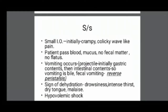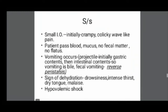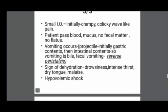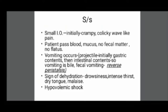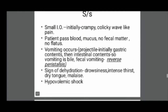The signs and symptoms of small intestinal obstruction are more acute. Initially the patient will experience crampy, colicky, wavelike pain. The patient will pass blood and mucus but no fecal matter. After that, projectile vomiting will occur — initially gastric contents are expelled, then intestinal contents. Due to the large amount of vomiting, there is metabolic alkalosis — an important acid-base imbalance.